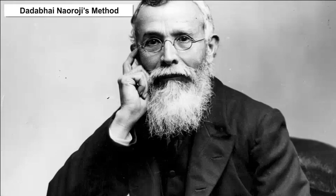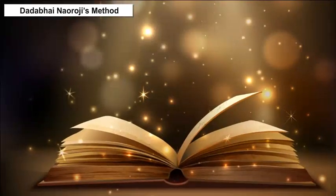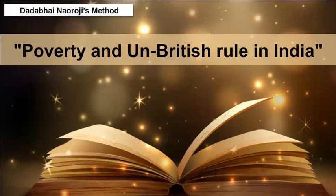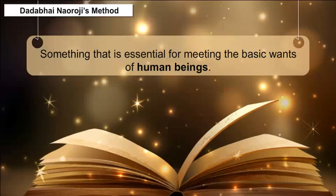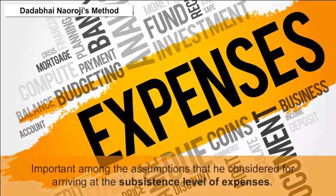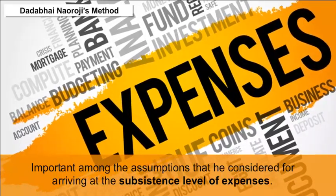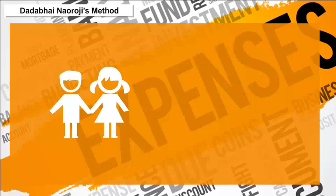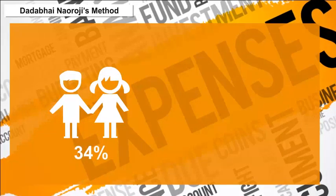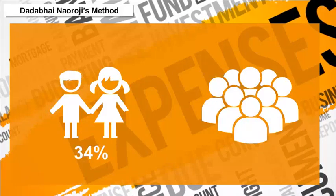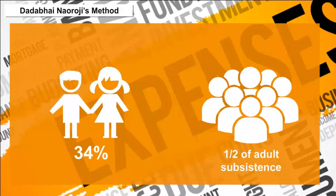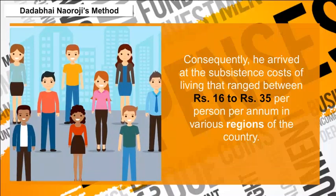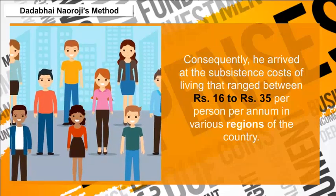Dadabhai Naoroji's Method: In his book 'Poverty and Un-British Rule in India,' Dadabhai Naoroji referred to subsistence as something essential for meeting the basic wants of human beings. Among his assumptions for arriving at the subsistence level of expenses was that about 34% of the children's population did not cost anything, and the remaining half cost one-half of the adult subsistence requirements. Consequently, he arrived at a subsistence cost of living ranging between 16 rupees to 35 rupees per person per annum in various regions of the country.